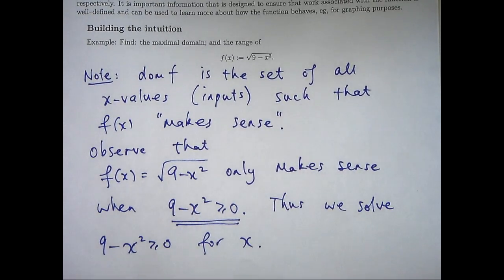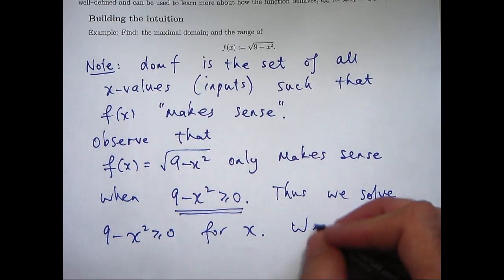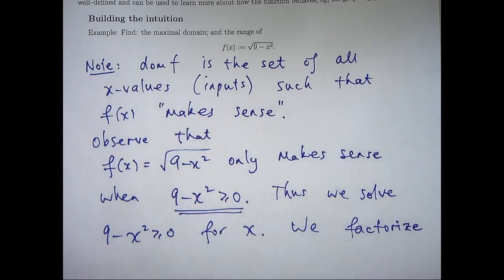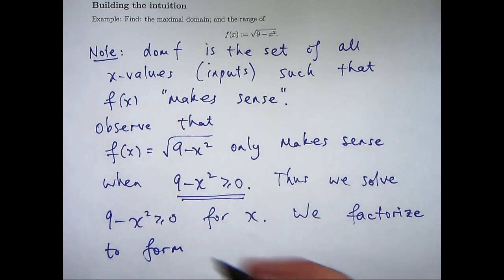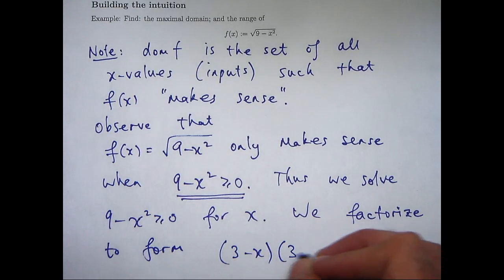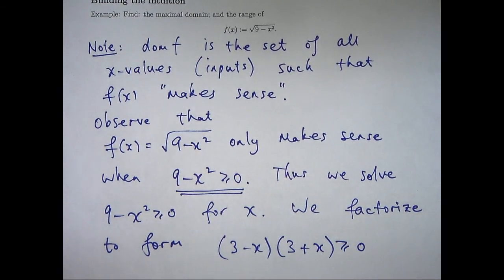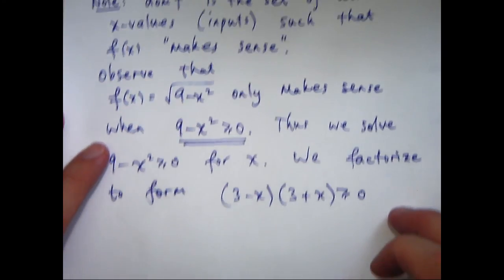So we're going to solve this inequality for x. Okay, so you can solve this in a number of ways. You can do it algebraically or graphically. First of all, I'm going to factorize the left-hand side. So I can factorize and form this equivalent inequality. And then it's just a matter of solving this again, either algebraically or graphically. I'm going to do it graphically.